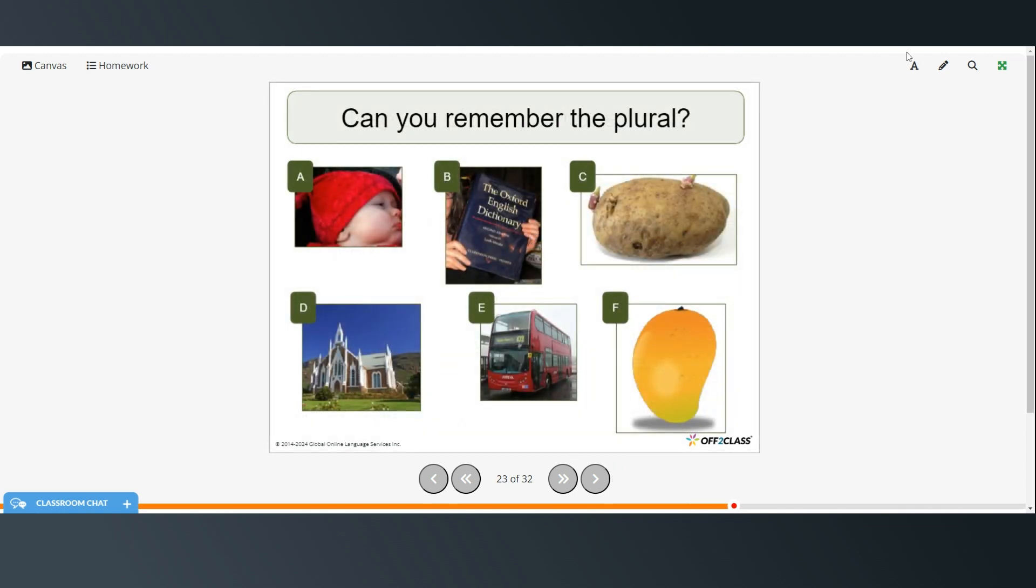Alright, so can you remember the plural of each of these? So babies. Dictionaries. Potatoes. Churches. Buses. And mangoes. Now remember, mangoes is one that can go either way, either with just an S or an E-S.